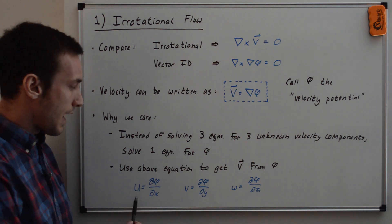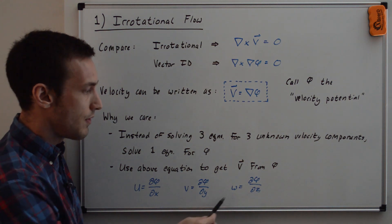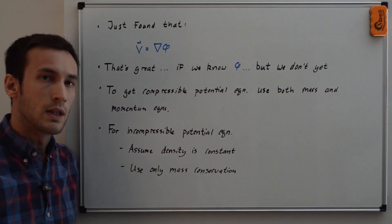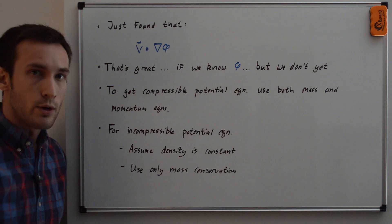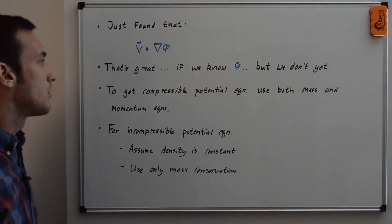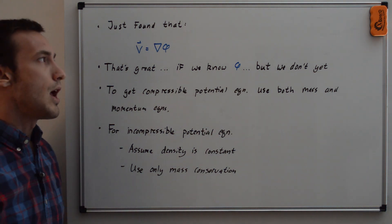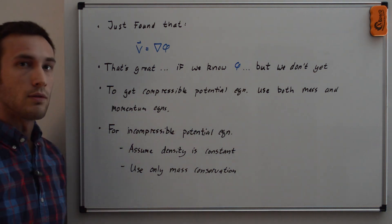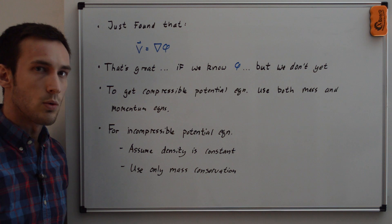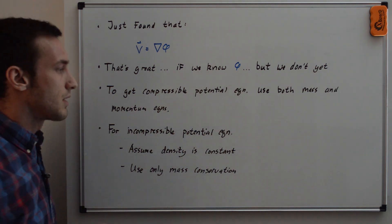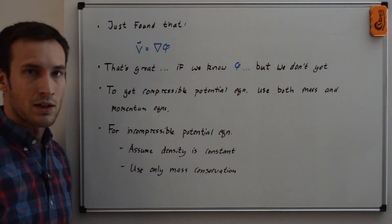The x-component is d phi/dx, the y-component is d phi/dy, and the z-component is d phi/dz. So we can get the velocity vector v as a function of only the scalar field phi — which is great if we know phi, but we don't yet. To get the compressible potential equation we would use both mass and momentum conservation equations. For the incompressible case, we only need the mass conservation equation, and that's what we'll focus on next.